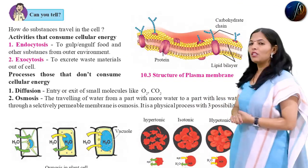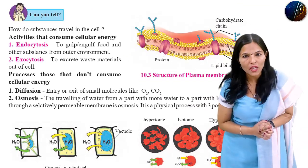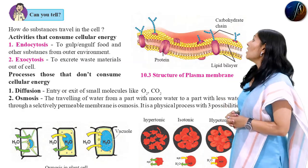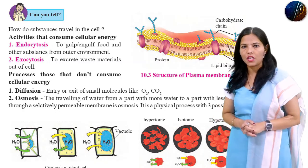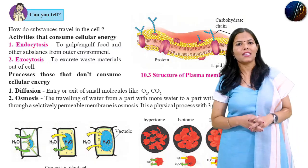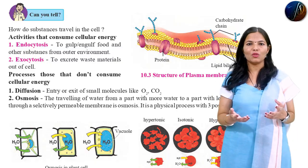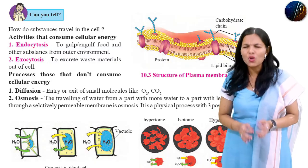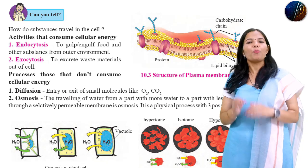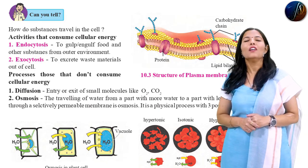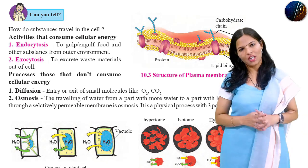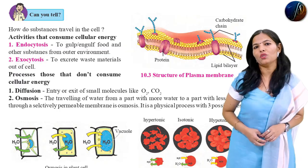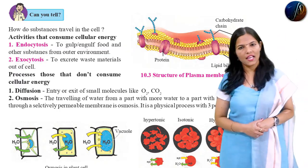The final point is endocytosis and exocytosis, which consume energy. This is the process. If you are confused, there is a very simple concept — so let me know in the comment box what is endocytosis and exocytosis.